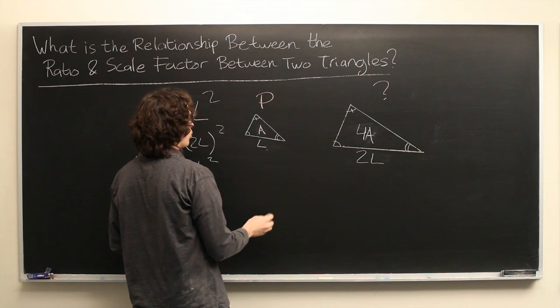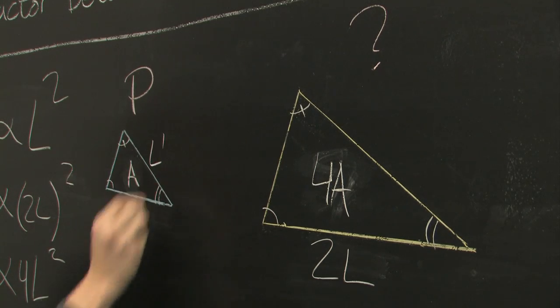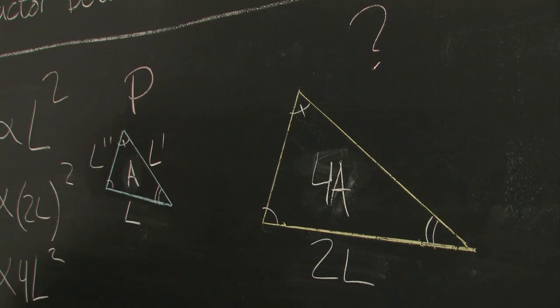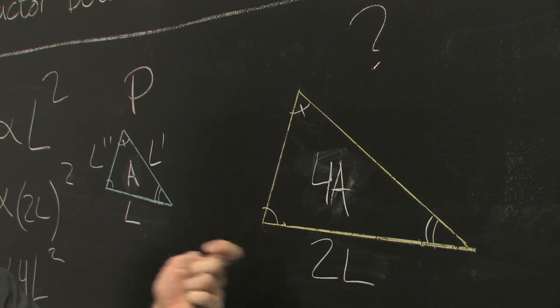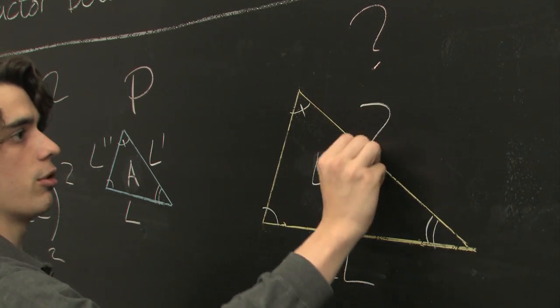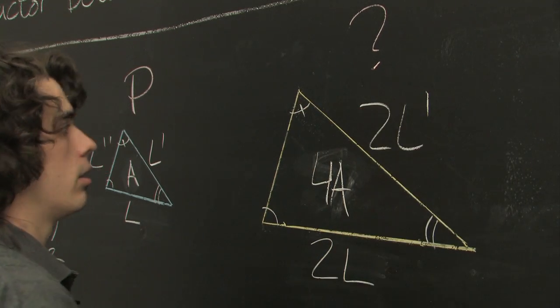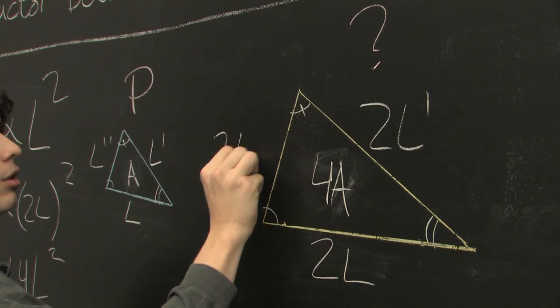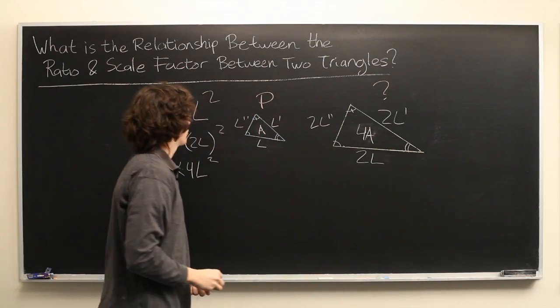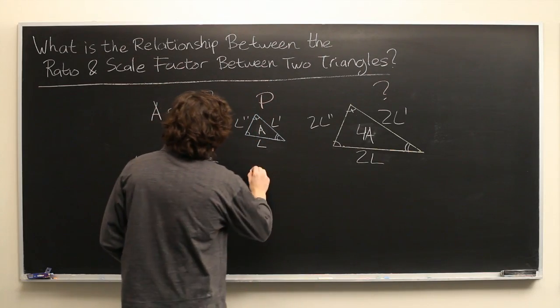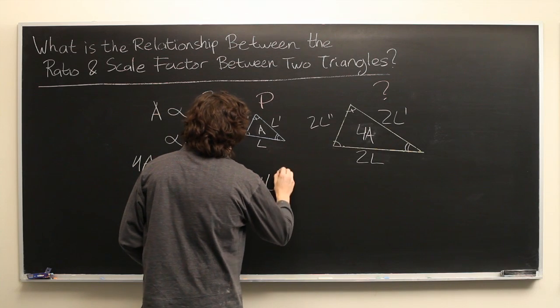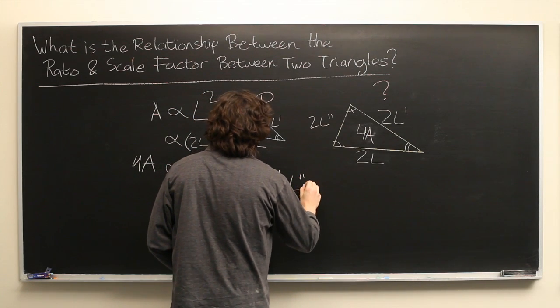If this is L, we'll call this L prime, L double prime. Well, if this side length is doubled, then this side length will just be doubled as well. 2L, 2L prime, 2L double prime.